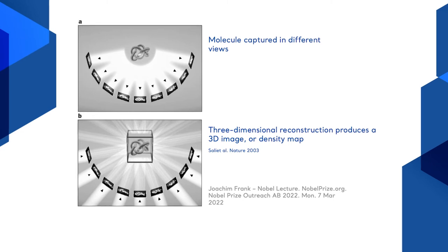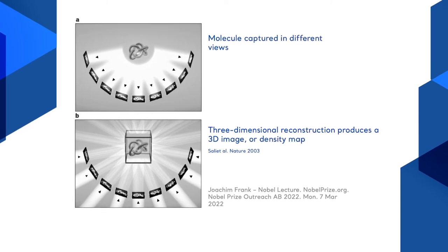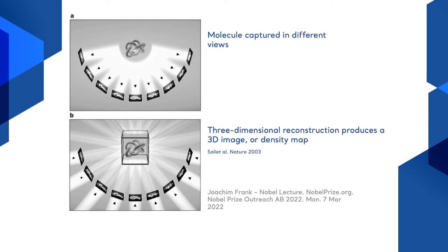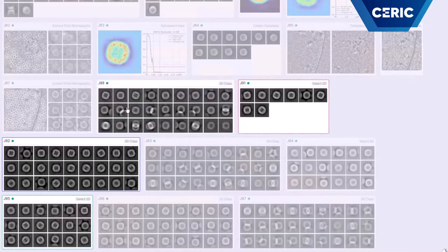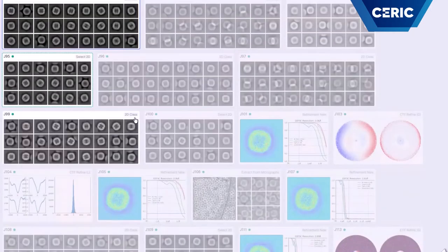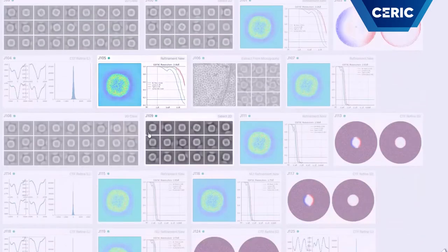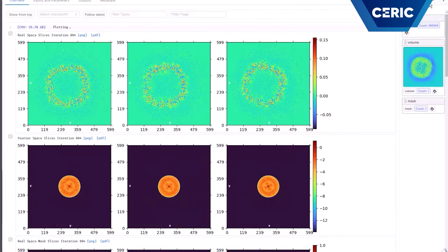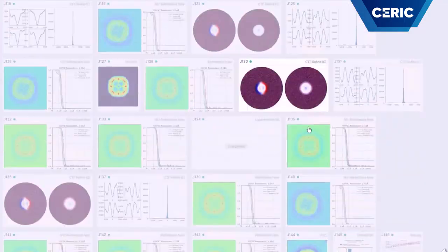Both single particle and tomography are based on back projection of 2D images into a 3D structure. While single particle uses a large number of identical particles randomly arranged in the ice, it merges them into 2D classes, assigns angles, and projects those classes into 3D. Tomography uses a series of 2D images of one object tilted in a controlled way and then projects them into a 3D structure.